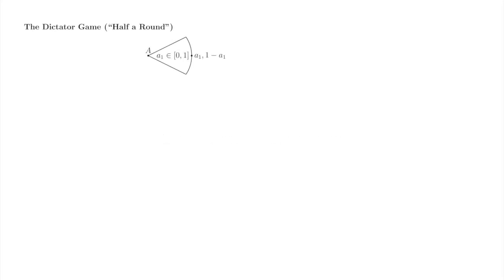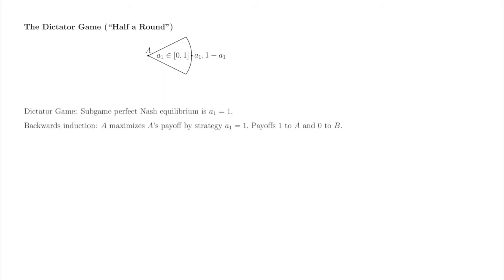Here is half of the building block: the dictator game we played on the very first day of class. Player A divides a pie — a dollar — between A and B, offering to keep A1 for herself and let B take the remainder of the pie, 1 minus A1. A maximizes A's payoff, i.e., A1 equal to 1, leaving B with 1 minus A1 equal to 0, in subgame perfect Nash equilibrium.